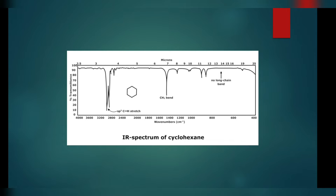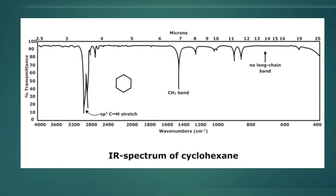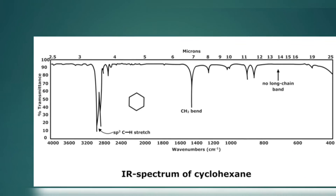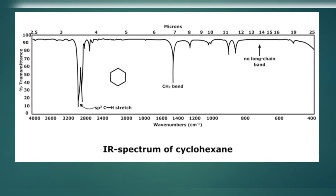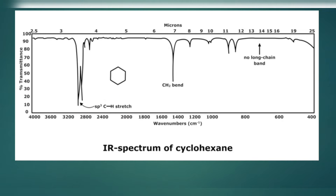Moving on to the next example. As you can see here, what we have is an sp3 C-H peak. As I mentioned, a peak at 3000 indicates an sp3 C-H stretch. Secondly, I need to determine whether there are CH2 or CH3 groups present.